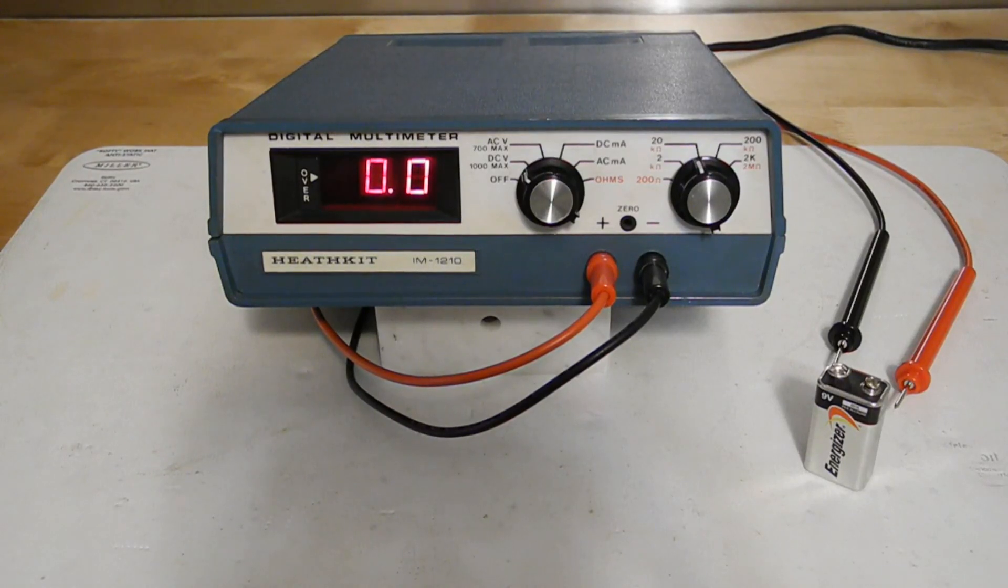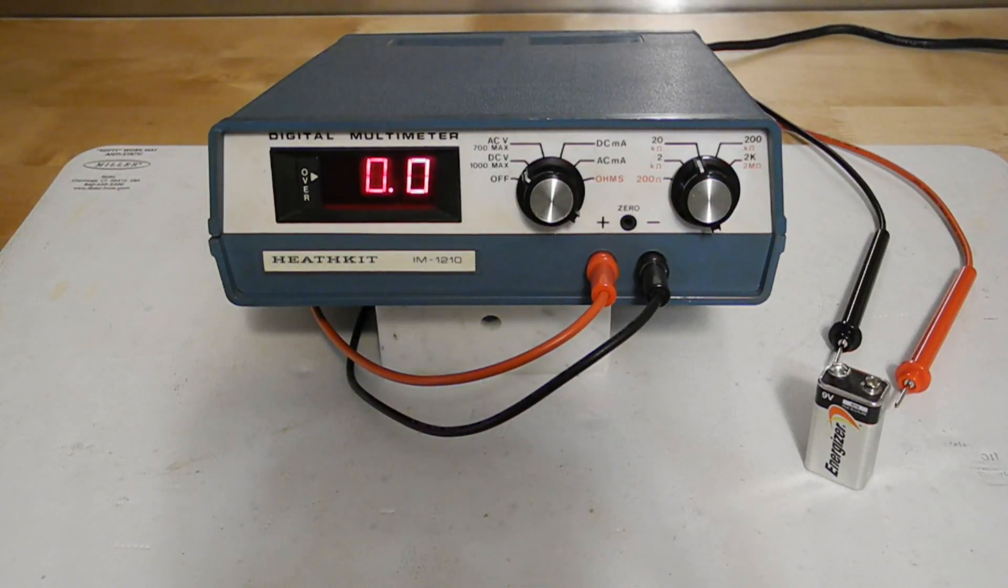Operation is quite straightforward. You set the function and the range and directly read the measurement on the display. Here, for example, I'm measuring the output of a 9-volt battery. We set the range to 20 volts and apply the test leads. Here the reading is 7.2 volts.